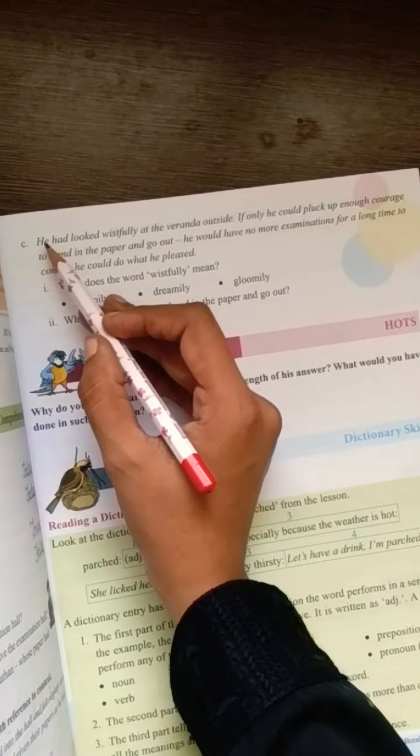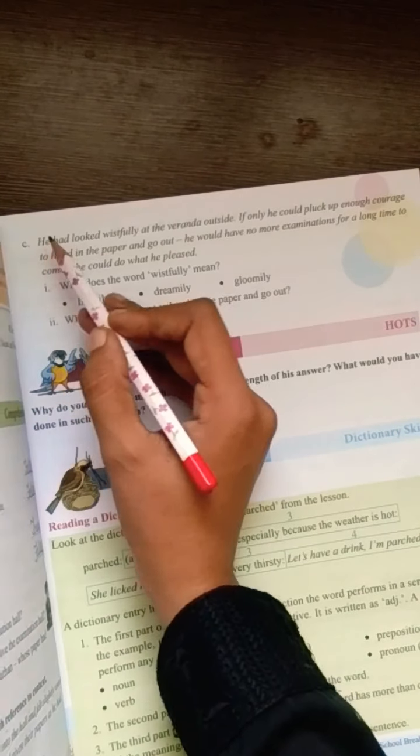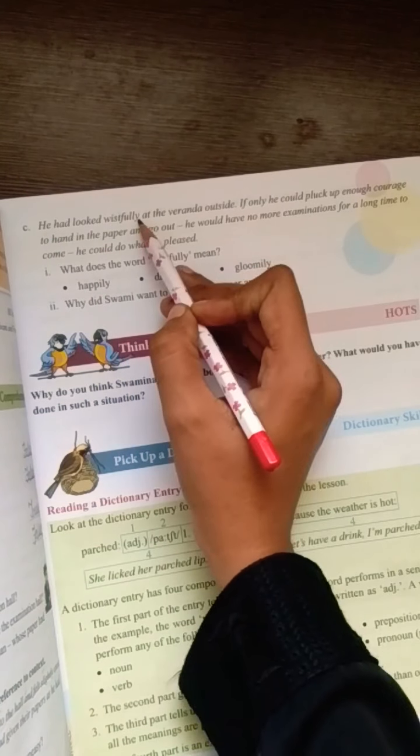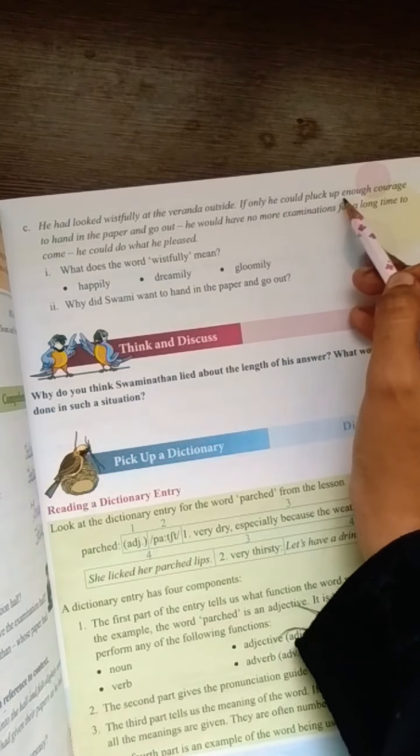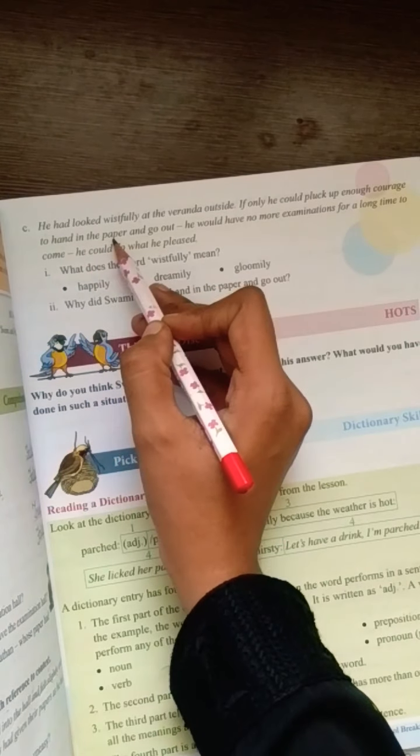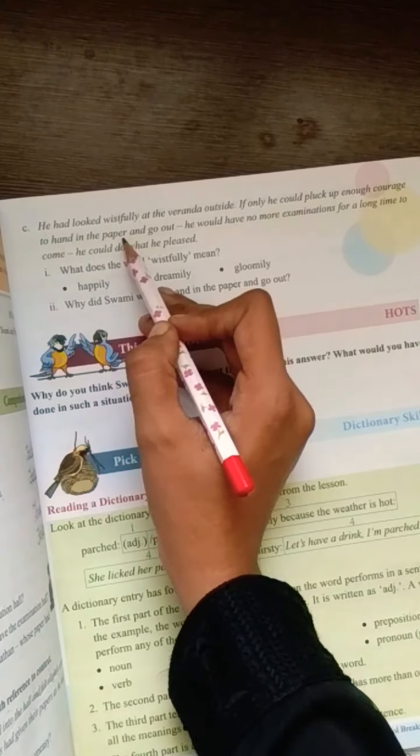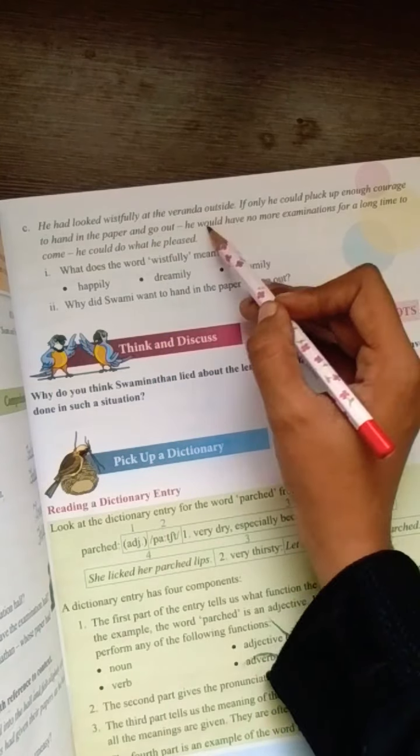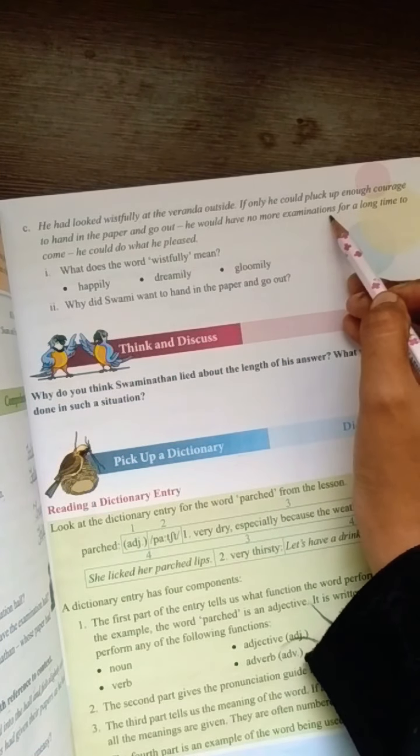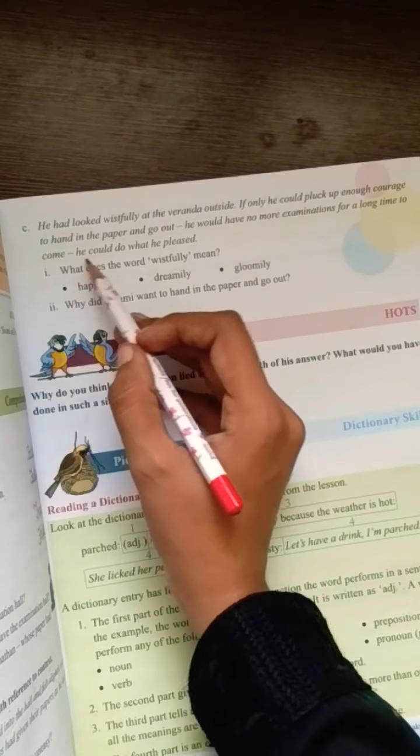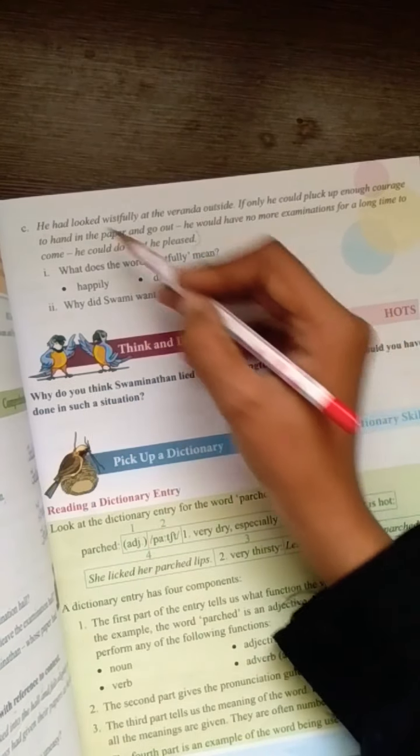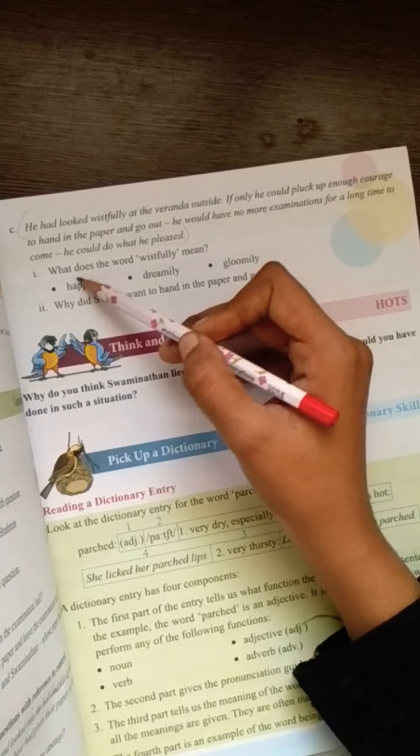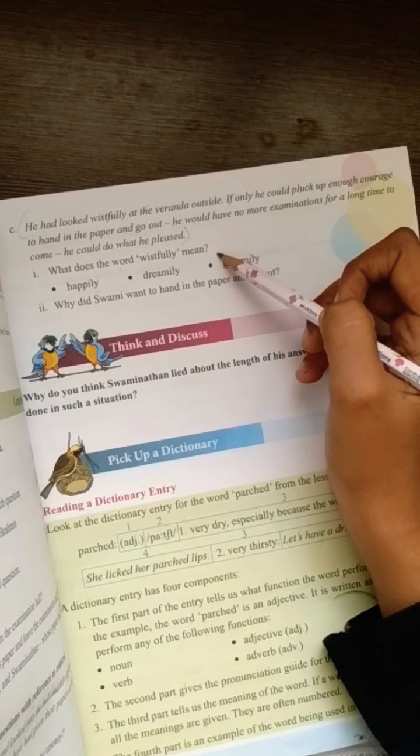Okay, you can see here. Your extract is, He had looked wistfully at the veranda outside. If only he could pluck up enough courage, hand in the paper, and go out. He would have no more examination for a long time to come. He could do what he pleased. So, this is your answer. Sorry, this is your context. So, your first question is,